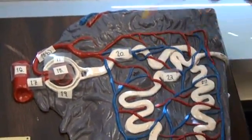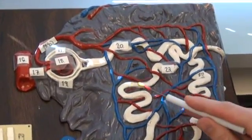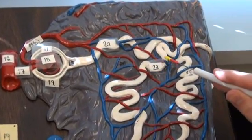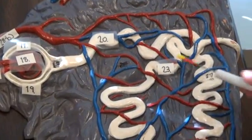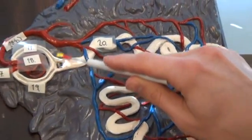And number 23 is here. This refers to the distal convoluted tubule. So distal because it's distal from the glomerulus.